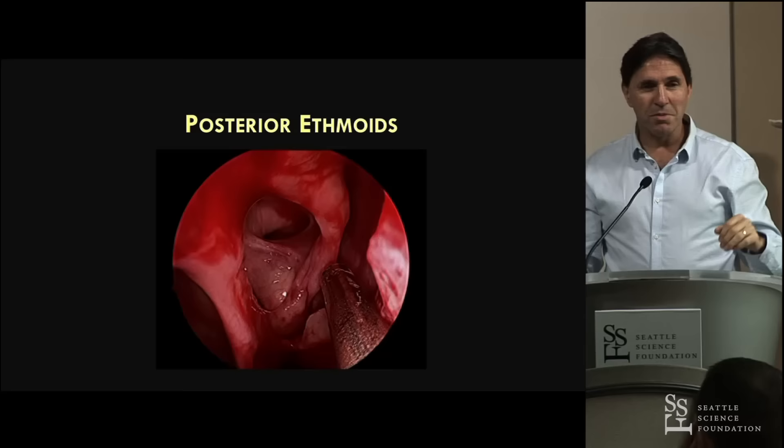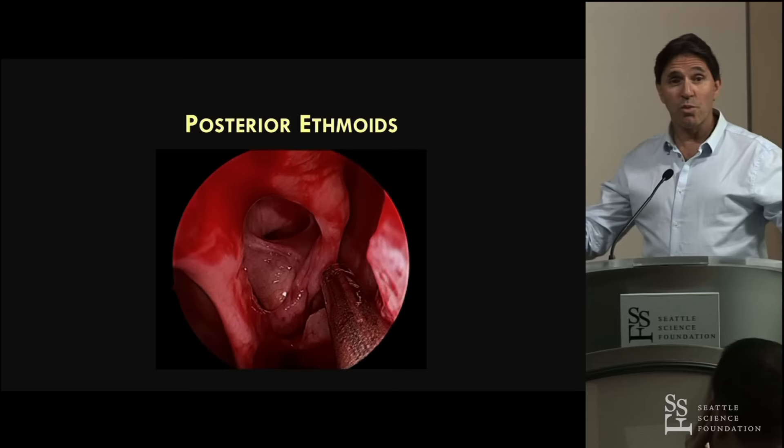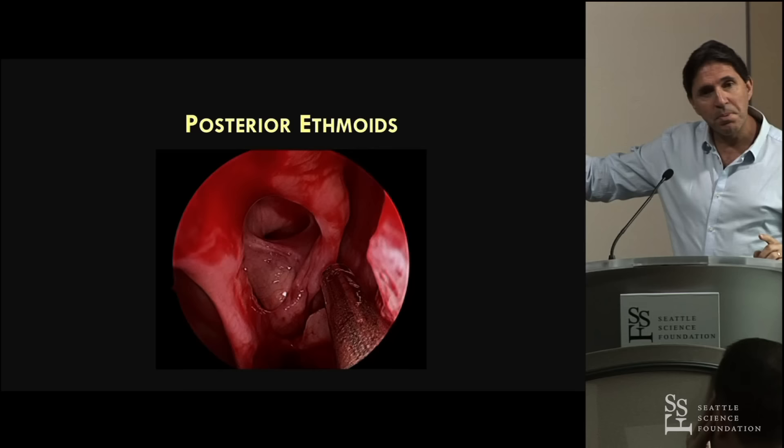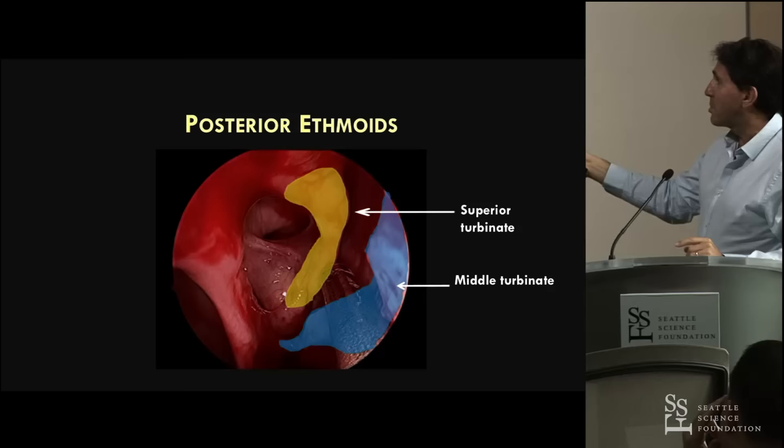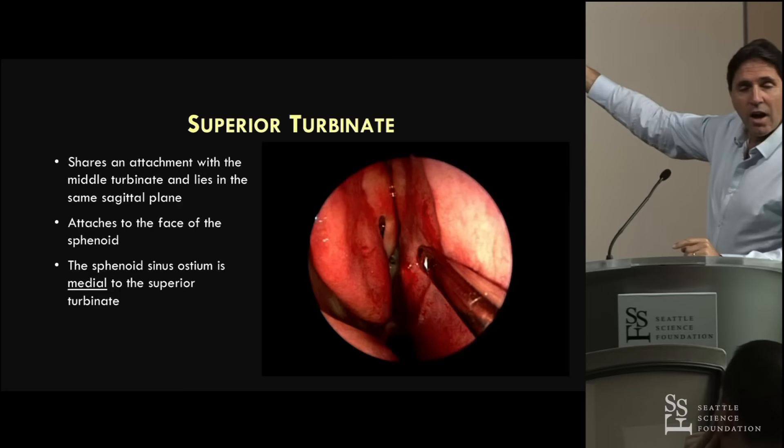So it's really important that you remember that relationship of the superior turbinate and the height of the orbit. There's the middle turbinate, there's the superior turbinate, and then we can safely go backwards towards the sphenoid ostium. The middle turbinate has been slightly medialized just to show the relationship, but as Brent said they have the exact same sagittal plane.